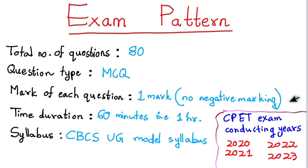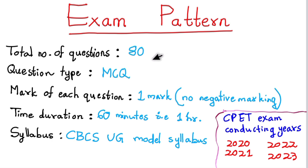Now let's look at the exam pattern for the CPT exam. The total marks are out of 100, which is calculated as the entrance exam marks plus career assessment marks. The career assessment mark is 30 marks, and the calculation also includes Plus 2 and Plus 3 marks.